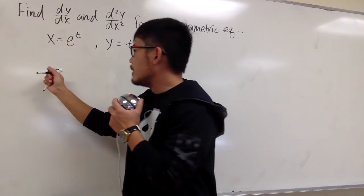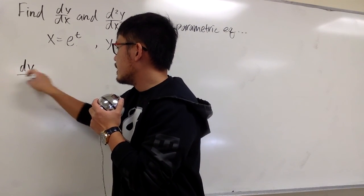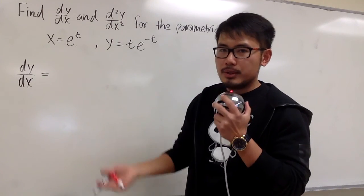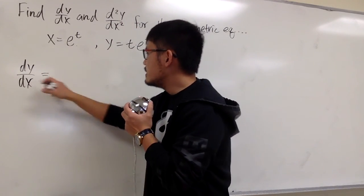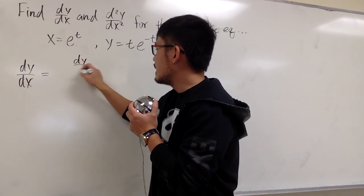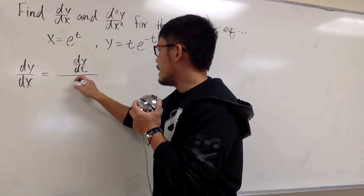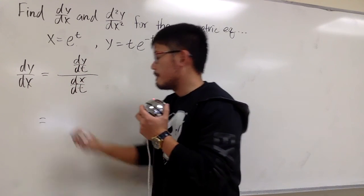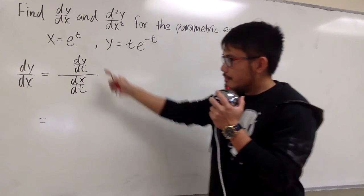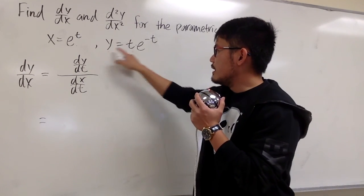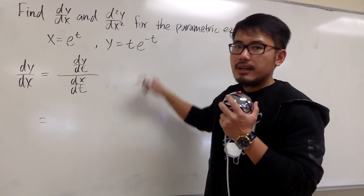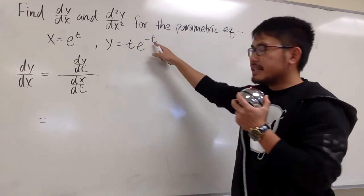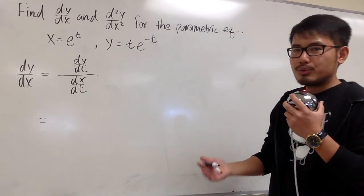We begin by finding dy/dx first. Because we are given a parametric equation, we have to compute dy/dt and then divide it by dx/dt. For the top, dy/dt, we look at the y equation and take the derivative. This is t times e to the negative t, so we have to use the product rule.